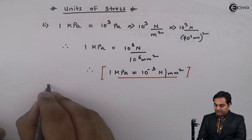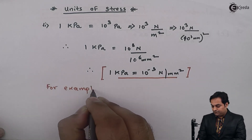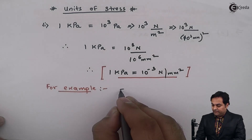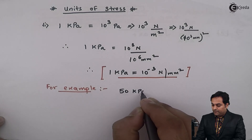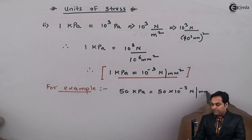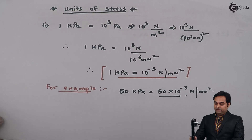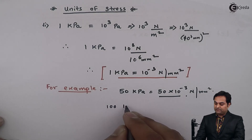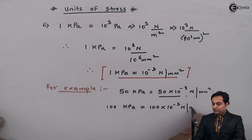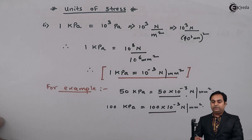For example, if the stress is 50 kilo Pascal, it equals 50 × 10 raised to minus 3 Newton per mm square. Similarly, if it is 100 kilo Pascal, it equals 100 × 10 raised to minus 3 Newton per mm square. This is how we convert from kilo Pascal to Newton per mm square.